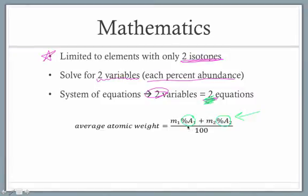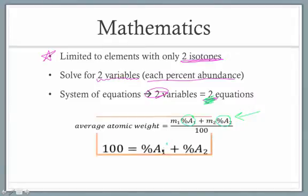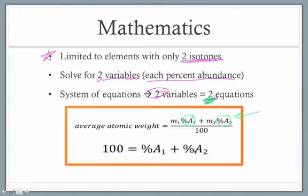And that second equation is something you might have already figured out on your own—the fact that our percent abundances are going to add up to a total of 100. Recall that they are percents, and percents always add up to a total of 100.